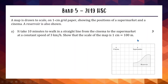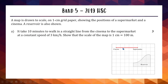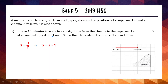Now into Band 5. From 2019, towards the back of the paper — pretty challenging. We have a map drawn on 1 cm grid paper. It takes 10 minutes to walk in a straight line from the cinema to the supermarket at 3 km/h. We need to show that the map scale is 1 cm equals 100 meters. We use the speed-distance-time formula: distance equals speed times time.